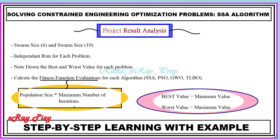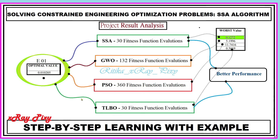Fitness function evaluations are calculated by multiplying the population size with the maximum number of iterations. For the first problem, the optimum value obtained is shown here. We obtained this value for SSA in 30 iterations, for GWO in 132 iterations, for PSO in 360 iterations, and for TLBO in 30 iterations.